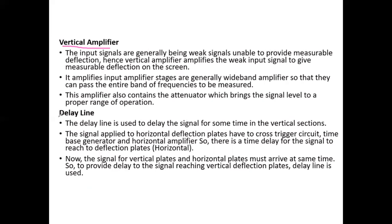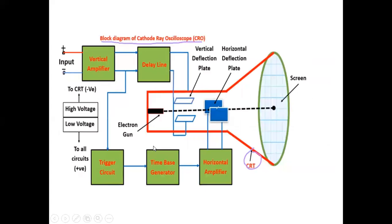The signal for vertical plates and horizontal plates must arrive at the same time. To provide a delay to the signal reaching the vertical deflection plate, we use the delay line. This is because the time required to generate the horizontal plate deflection is more than what the vertical amplifier takes — that is why we use the delay line.